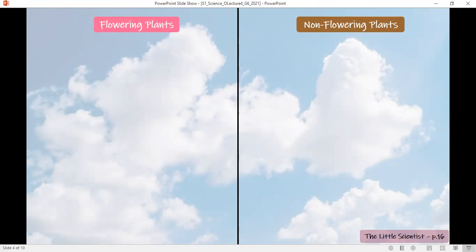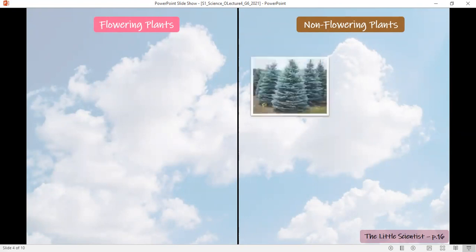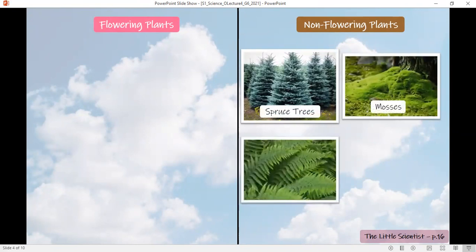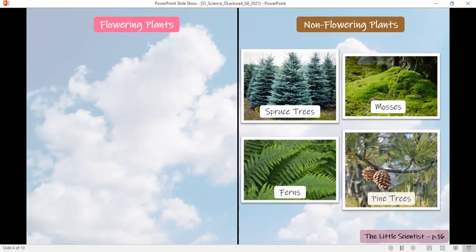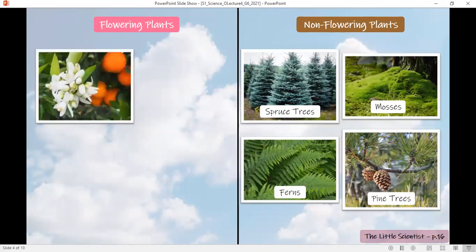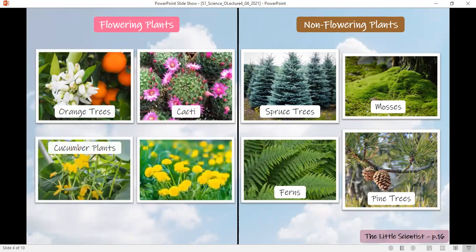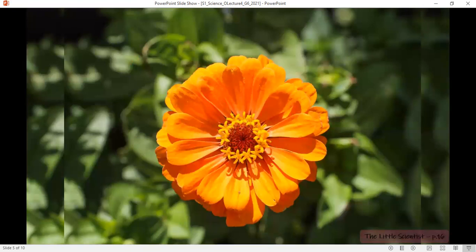Let's give some examples of those two categories of plants. Spruce trees, mosses, ferns, and pine trees are examples of non-flowering plants. These plants do not make flowers at all, while forest trees, cacti, cucumber plants, and dandelions are examples of flowering plants.